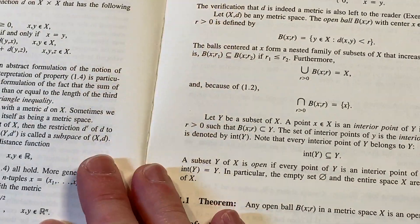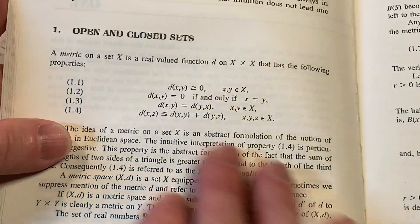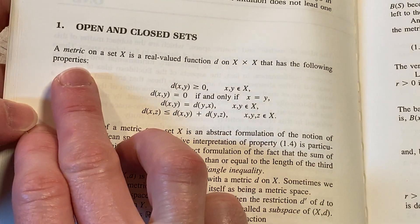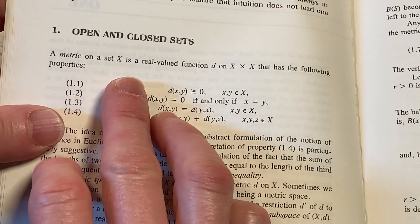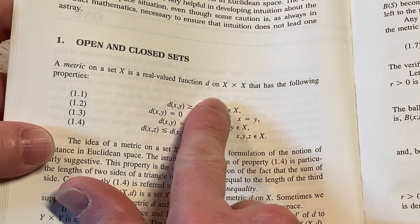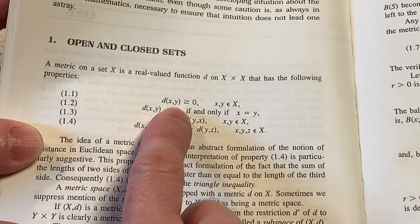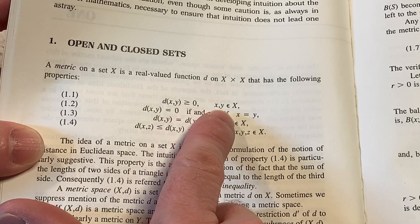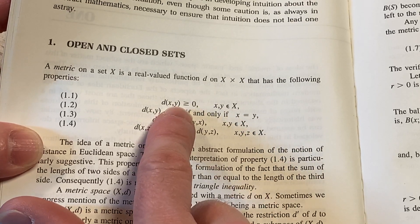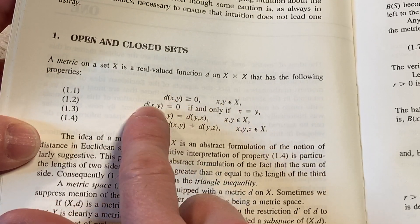Okay. So it starts with open and closed sets. Starts by defining a metric. A metric on a set X is a real valued function, little d on X cross X, this is the Cartesian product, that has the following properties. So d(x,y) is greater than or equal to zero for all x, y in X. So basically, it's non-negative.